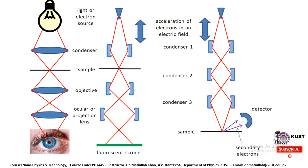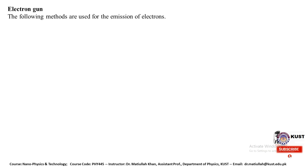Comparing the three microscopes: in an optical microscope, light from a source falls on the object and is reflected to the eye. In an electron microscope, an electron source creates electrons that are accelerated and directed through condenser lenses onto the sample. In TEM, the beam transmits through the sample; in SEM, it is reflected. In both cases, the objective lens collects the signal and produces the final image.